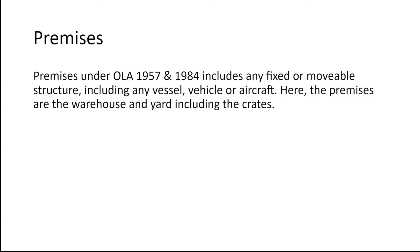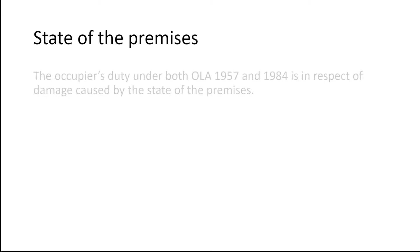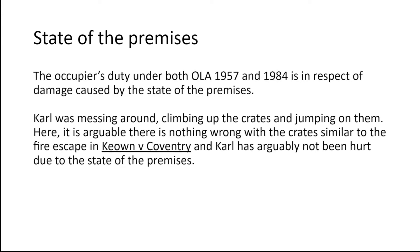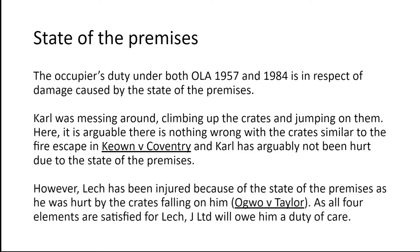The third issue is what are the premises. They are defined as any fixed or movable structure, including a vessel, vehicle or aircraft. Here the premises are the warehouse and yard, including the crates. Lastly, the damage has to be caused by the state of the premises, which is the same for both Acts. There's a distinction here because Carl is messing around and jumping on the crates, so arguably nothing is actually wrong with them — similar to the fire escape in Keown v Coventry. Even if you think his case would fail here, you carry on and do all the other elements, making clear this could be a stumbling block. Lek, by contrast, was injured because of the state of the premises as the crates fell on him — Ogwo v Taylor is the case for the 1957 Act.